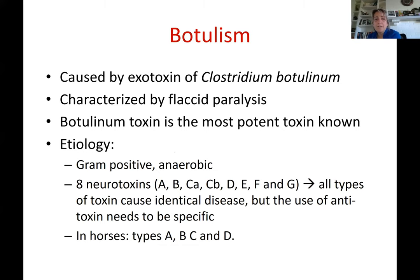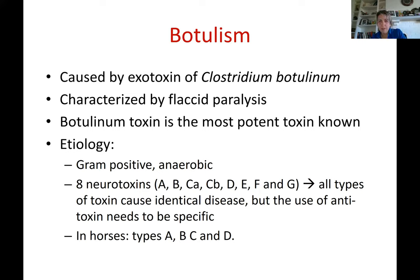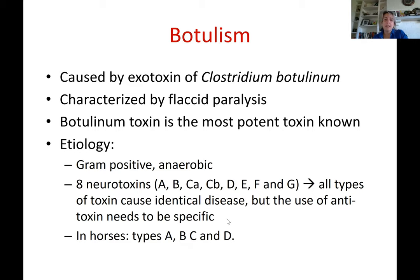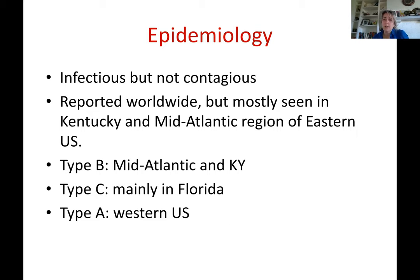Like all Clostridium bacteria, Clostridium botulinum is gram-positive and anaerobic. It has eight neurotoxins, and unlike tetanus — which has two (tetanolysin and tetanospasmin) — all eight botulinum toxins cause the exact same clinical signs. The difference is prevalence by region. In Kentucky, type B is most common. The available botulism vaccine only protects against type B, but fortunately 80% of botulism cases are caused by the type B toxin.